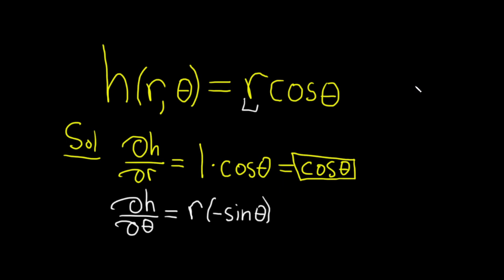The last thing to do here is just distribute the r, just multiply it by this, and put the negative in the front. Just a little bit of rearranging. Let's write it like this: negative r sine theta. Rather, rearranging is what we needed to do.